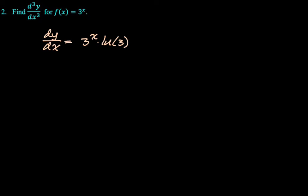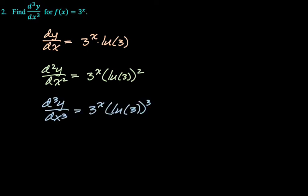So the derivative of 3 to the x is 3 to the x natural log of 3. And then there's already a natural log of 3. So now we're at 3 to the x natural log of 3 squared. And then the derivative of 3 to the x is 3 to the x natural log of 3. But there's already a natural log of 3 squared. So now we're at cubed. And that's the whole thing. You can generalize the derivative of 3 to the x. The n-th derivative is going to be 3 to the x natural log of 3 to the n-th. Which is kind of neat. It's always neat when you can generalize a derivative.